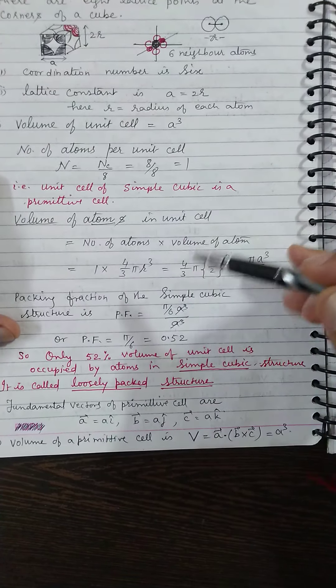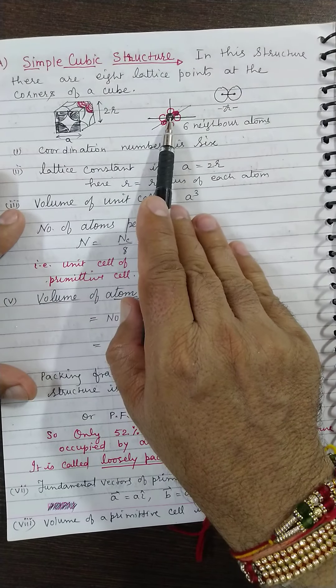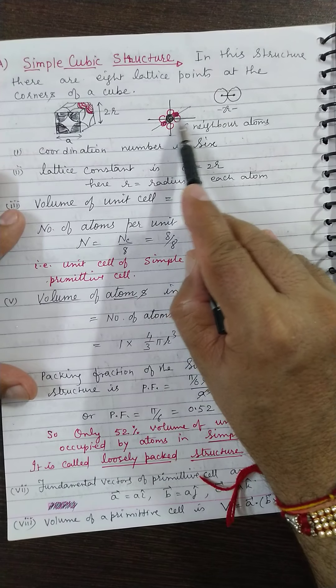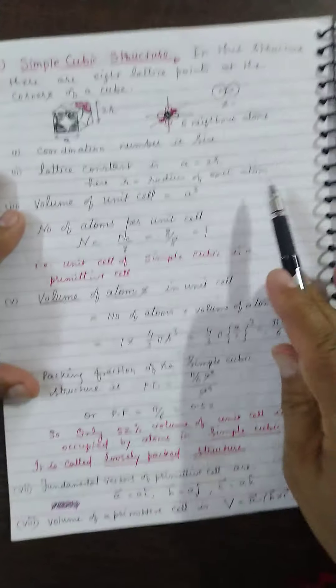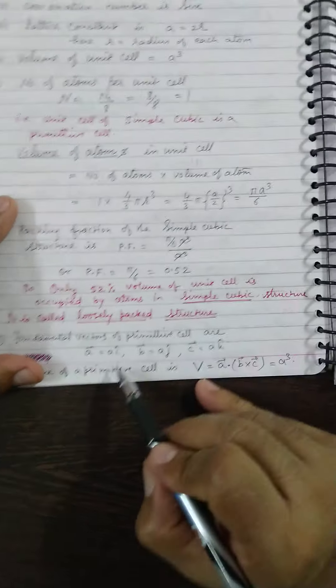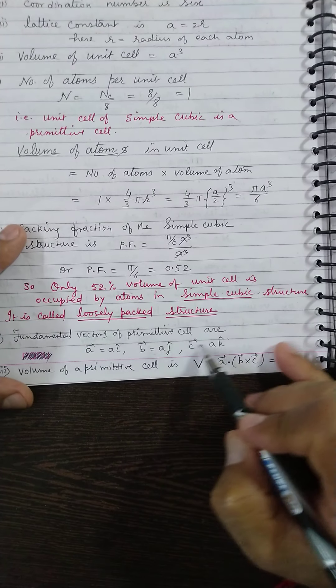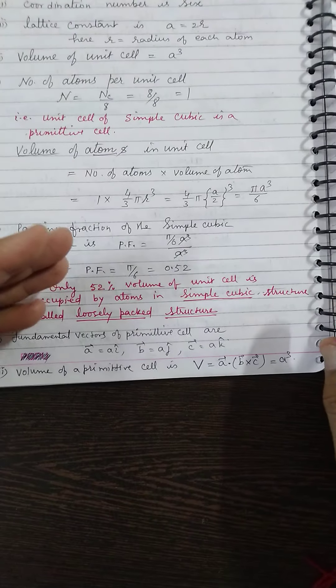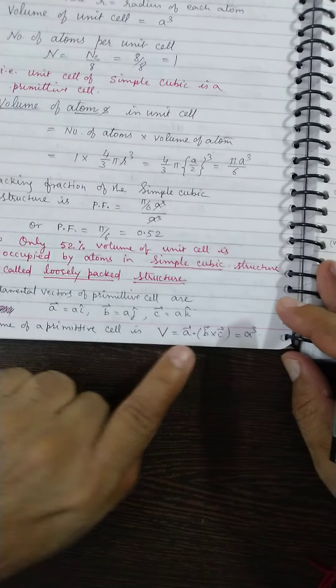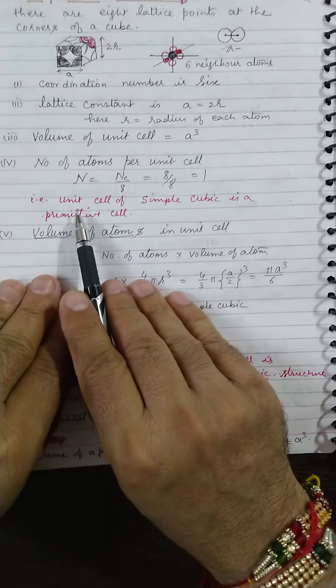The fundamental vectors of the primitive cell can be easily understood. Taking this as origin, along x-axis, along y-axis, along z-axis—this is X, Y, Z—I will get A i-cap, A j-cap, and A k-cap as the basis vectors of primitive cell. Volume, the simple formula, is always A dot B cross C.